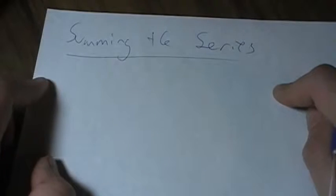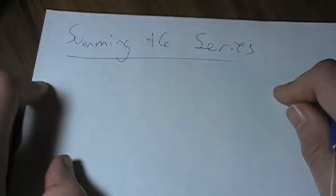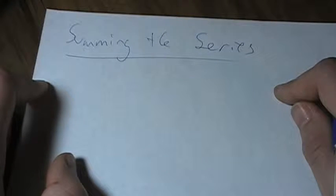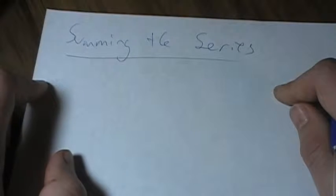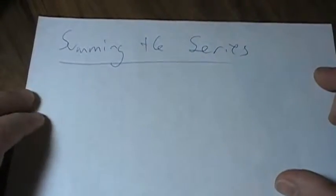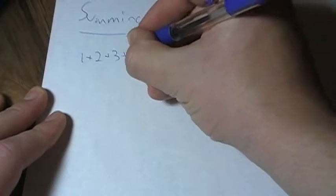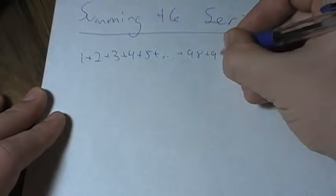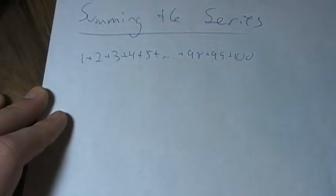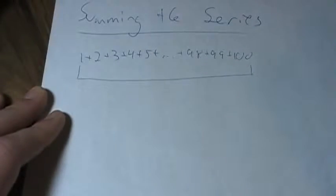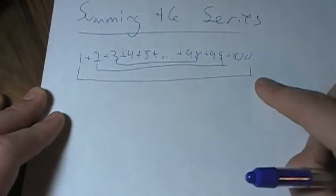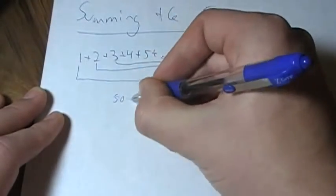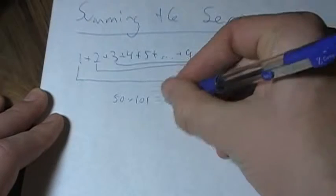Let's talk about summing the series. There's an interesting story as to how this formula came about. When Gauss was a little child, he outsmarted his teacher — the teacher asked him to add 1 through 100 as busy work, but he did it really quickly and got the right answer. He paired 1 with 100, that's 101; 2 with 99, that's 101; 3 with 98, that's 101. He paired the 100 numbers into 50 pairs each of 101, so 50 times 101 is 5050, and that's the correct answer.